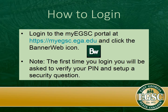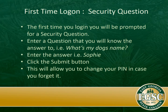In order to log in to BannerWeb, you go to the My EGSC portal and click on the BannerWeb icon. The first time that you log in, you will be asked to verify your PIN and set up a security question. This question will allow you to change your PIN in case you forget it — it is just like any other security login. They will ask you a question, for example, 'What's my dog's name?' The answer is Sophie, then click the submit button and you will be able to retrieve your PIN if you forget it.